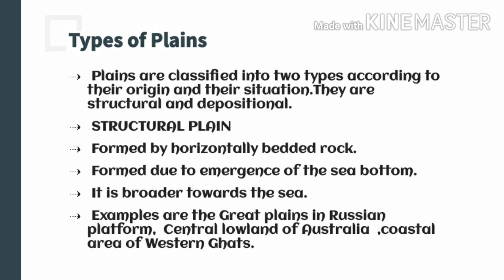We will explain these one by one. What exactly is a structural plain? It is formed by horizontally bedded rock. When the horizontally bedded rocks have not been disturbed by any kind of earth movement, that kind of plain is known as the structural plain. Apart from it, the plains formed due to the emergence of the sea bottom — where the sea bed has emerged and a formation of plain has taken place — that is also a structural plain.